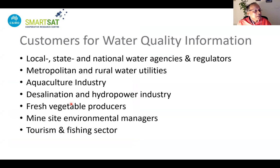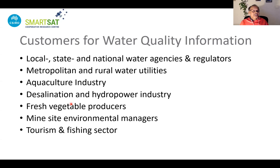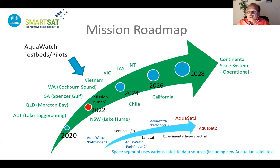Over the past year, we have spent time developing a good understanding of user communities — today is one of them. Here is a list of potential customers, spread from local, state and national water agencies all the way to tourism and fisheries sectors, covering a number of spectral characteristics. This could be used not only for water quality operations and recreation, but for a variety of parties interested in water quality monitoring. Of course, it will also help grow the Australian space industry, including new business in satellite manufacturing, IoT, ground stations, data processing, and so on.